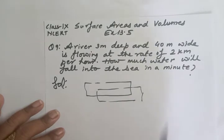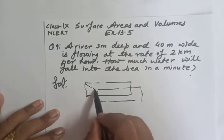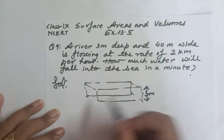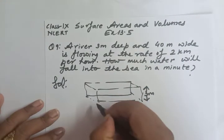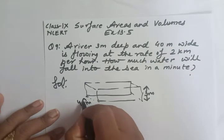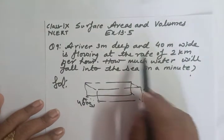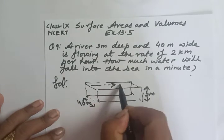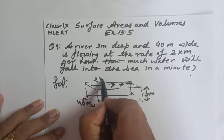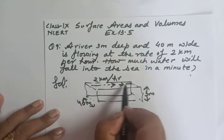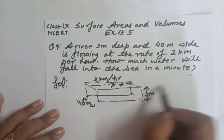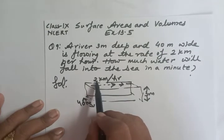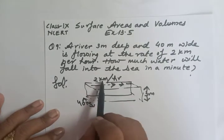This is the river: it is 3 meters deep (height = 3 meters) and 40 meters wide. The water is flowing at 2 km per hour. The water is flowing along the length of the river. Whenever speed is given, we treat that distance as the length.